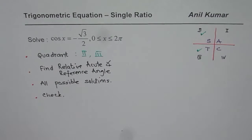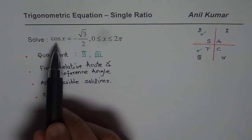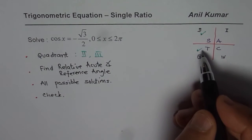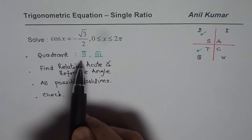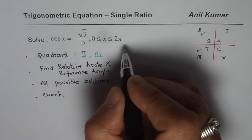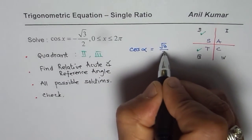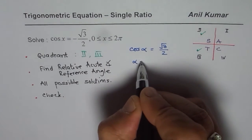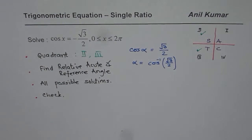The next step is to find the relative acute angle. We know the question is cos(x) = -√3/2, but we first need to find the acute angle. If you do cos inverse of this number using a calculator you'll only get one answer, so that would give an incomplete solution and result in poor marks. What we do here is write this as cos(α) = √3/2, where α is our acute angle — drop the negative sign, since in quadrant one all ratios are positive. So α = cos⁻¹(√3/2).